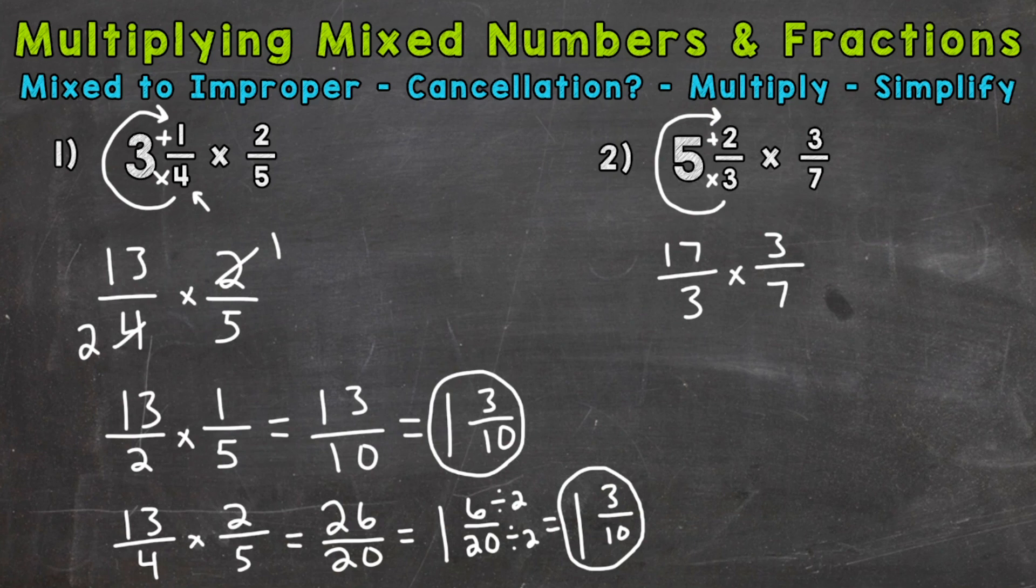Now we can look to see if we can use any cross cancellation here. And 17 and seven, greatest common factor is one. So we cannot use any there. But we have a three and a three. So greatest common factor is three. We can divide each by three. So three divided by three is one. And three divided by three is one.